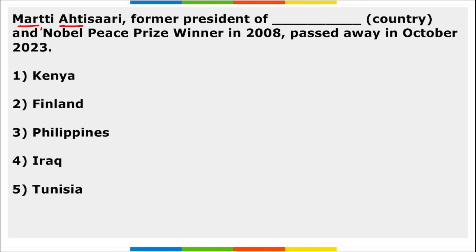Martti Ahtisaari, former President of Finland and Nobel Peace Prize winner in 2008, passed away in October 2023. He was a former President of Finland and Nobel Peace Prize winner, and recently passed away in Helsinki, Finland at the age of 86.